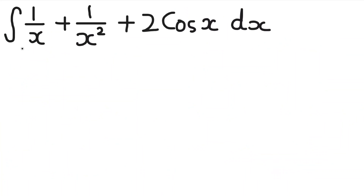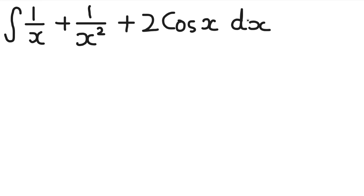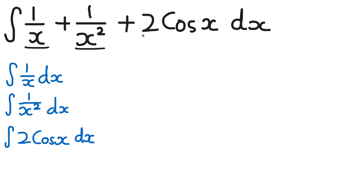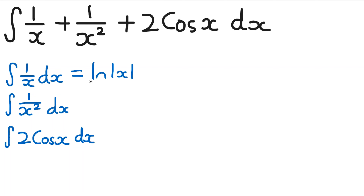Here's an example putting these principles into practice. We have the integral of 1 over x plus 1 over x² plus 2 cos x, dx. When you have multiple terms like this, just do them individually one at a time to avoid getting overwhelmed. Start with 1 over x: when you integrate 1 over x, it's the natural log of the modulus of x. I'd really recommend cementing this in your head because it comes up a lot.